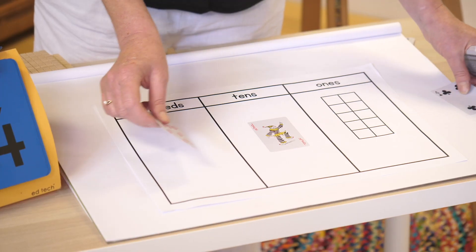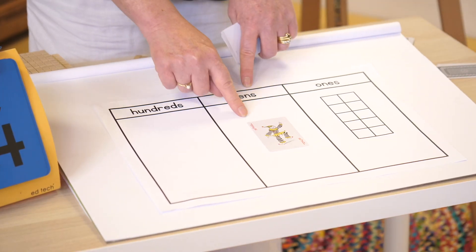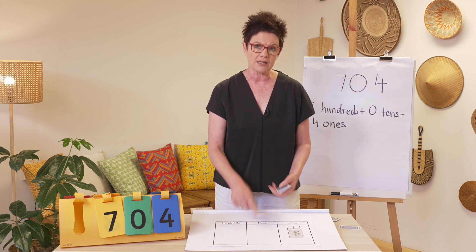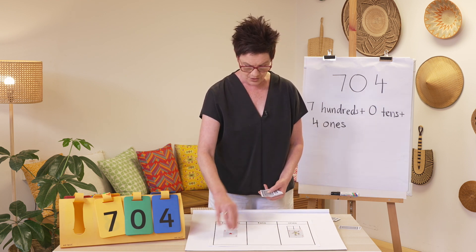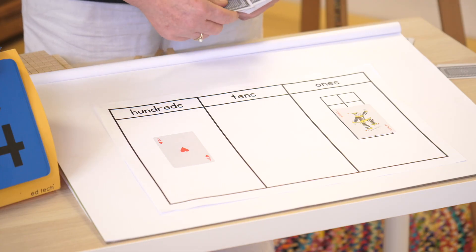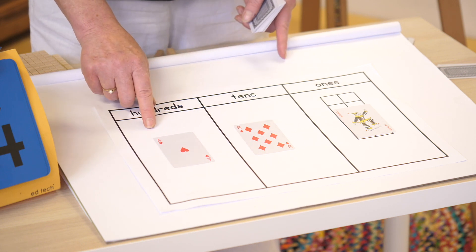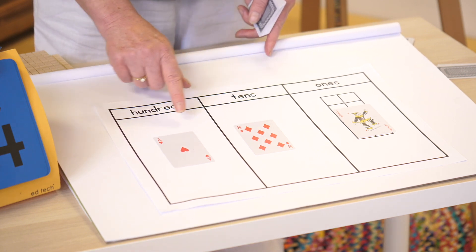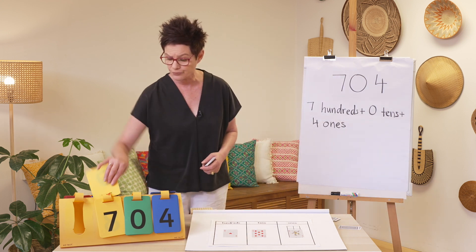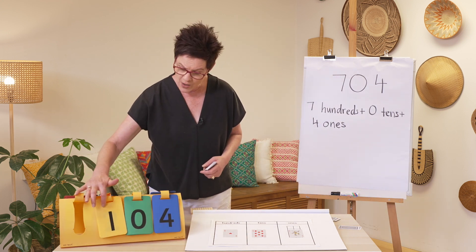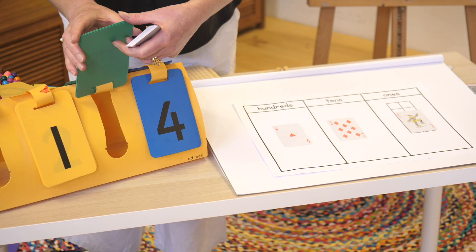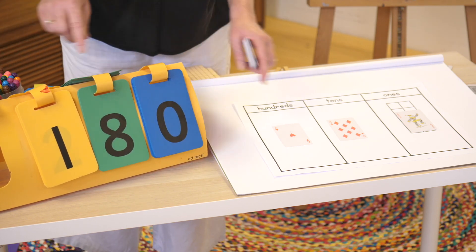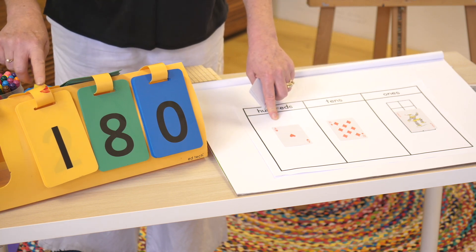I'm going to take my two cards away. I can leave my joker — which is my zero in the tens — but I might move it to my ones now. I have got an ace — which is one — and an eight. With the zero in the tens, this number makes 108. With the joker as zero in the tens, this number makes 180.